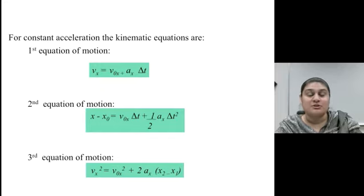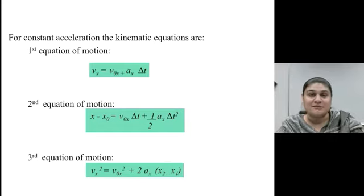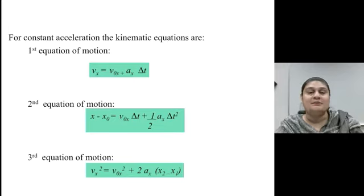The second equation of motion is the displacement equation. So displacement equals initial velocity times time, change in time, plus 1 half A delta T squared.